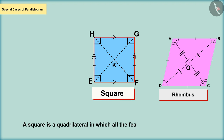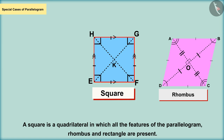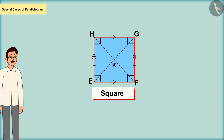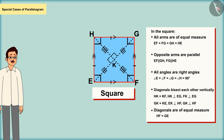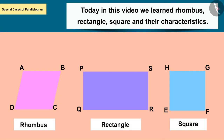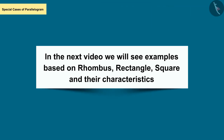Therefore, the square is a quadrilateral in which all the features of the parallelogram, rhombus, and rectangle are present. All the arms in the square are of equal measure, the opposite sides are parallel, all angles are right angles, and since it is also a rhombus, its diagonals are perpendicular to each other. Today in this video we learned about rhombus, rectangles, and squares along with their characteristics. In the next video we will see some examples based on these.